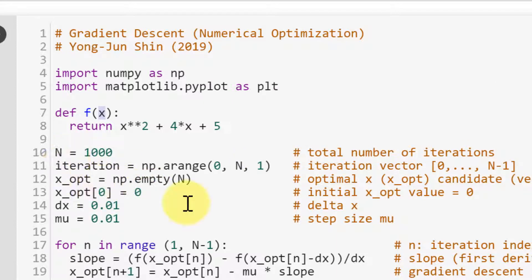This uppercase N is number of iterations. And iteration is a vector, 0 up to N minus 1.